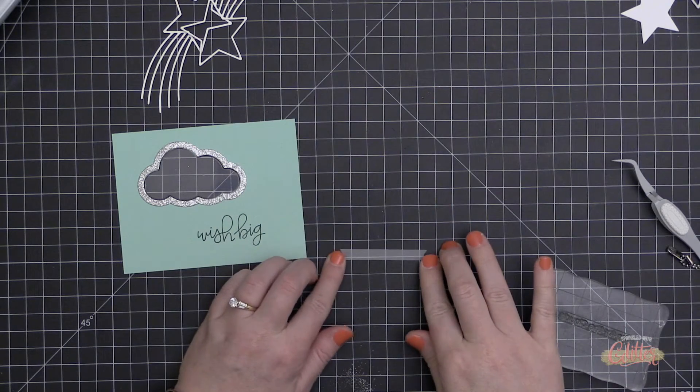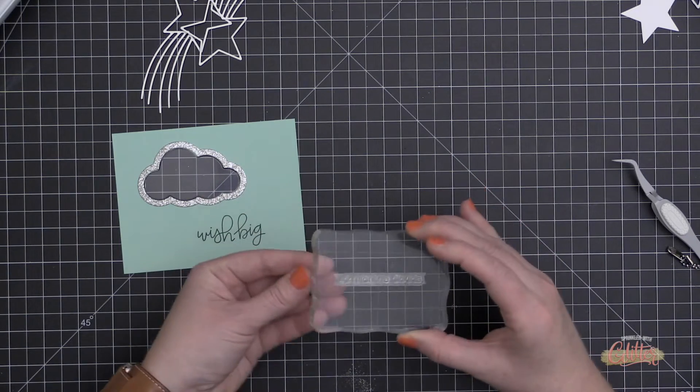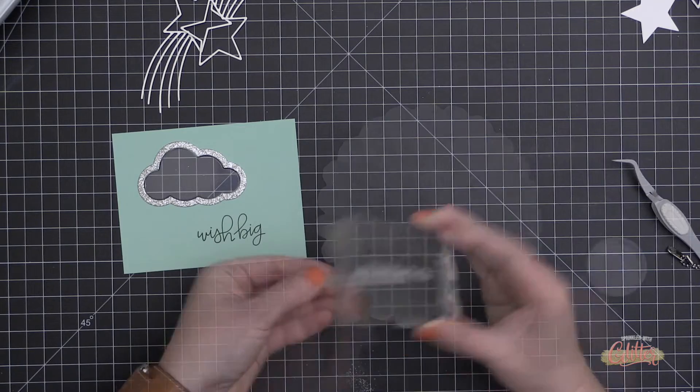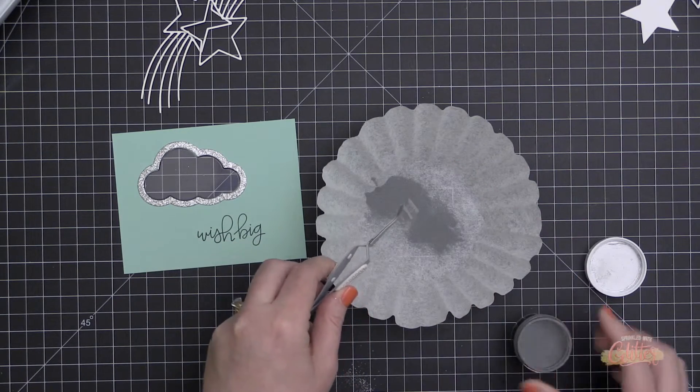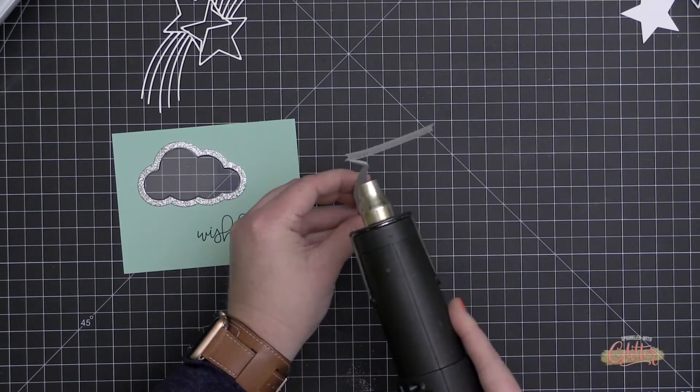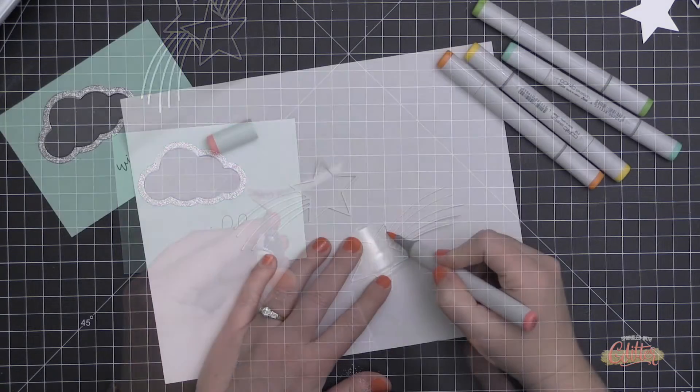Now I am going to emboss this Aim for the Clouds greeting on this vellum sentiment strip. So I prep the surface with a powder tool, I'm stamping that down in some VersaMark ink, and then I'm going to sprinkle on some silver embossing powder. I'm just going to tap off the excess before I heat set that.